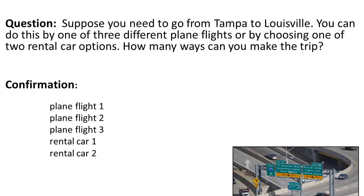This is a case where we can actually confirm the result by listing all possible options. We have plane flight 1, plane flight 2, plane flight 3, rental car 1, and rental car 2. So you can see that there really are five possible travel options.